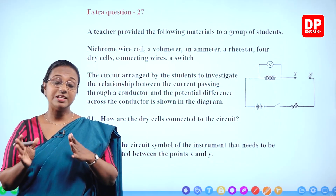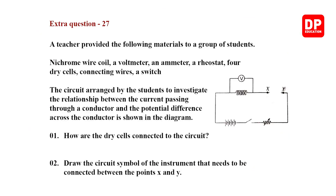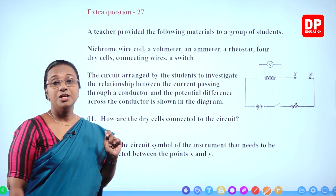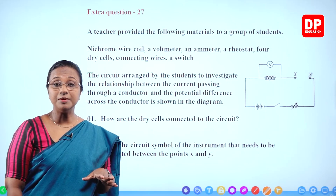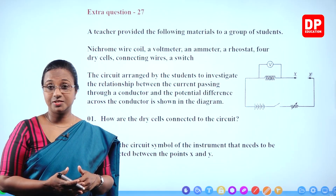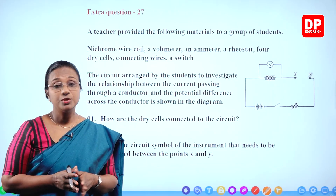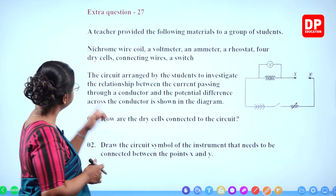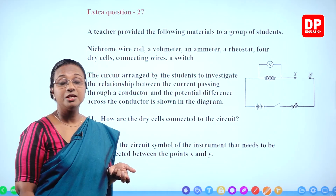Those are the contents of the lesson. Now, extra question 27: a teacher provided the following materials to a group of students — a nichrome wire coil. Nichrome is an alloy made of nickel and chromium; as a conductor it has very high resistance, so a lot of heat is produced when current flows through it. Nichrome is usually used in electric appliances where heat needs to be generated.